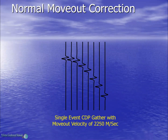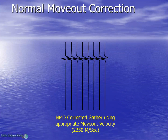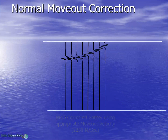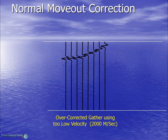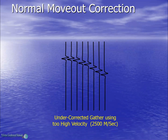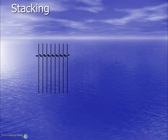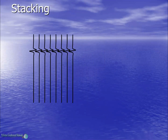Now let's consider a single-event CDP gather with an NMO velocity of 2250 meters per second. If NMO correction is applied using the exact NMO velocity of 2250 meters per second, then the events are flattened as shown. If a lower velocity is used in the NMO correction, we get a larger NMO time shift and thus we get an overcorrected gather. Similarly, if a higher velocity is used, we get an undercorrected gather. Thus we have to apply the appropriate NMO velocity to flatten all the events.